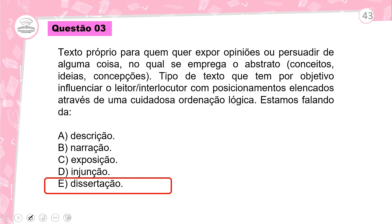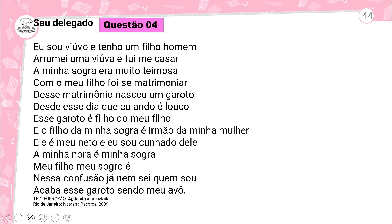Vamos lá para a quarta questão. Temos aqui um gênero textual: um poema. Eu sou viúvo e tenho um filho homem. Amei uma viúva e fui me casar. Minha sogra era muito teimosa, com meu filho foi se matrimoniar. Desse matrimônio nasceu um garoto. Desde esse dia que eu ando é louco. Esse garoto é filho do meu filho, e o filho da minha sogra é irmão da minha mulher.